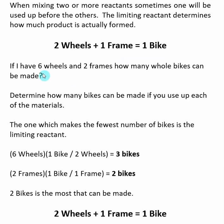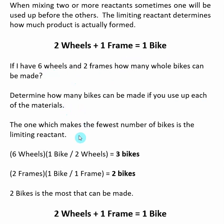In this question, I have six wheels and two frames, and I want to know which of these two reactants is my limiting reactant and how many bikes I can make. The first thing we do is determine how many bikes can be made if we used up each of the individual reactants separately — two separate calculations. Then we compare which reactant makes the fewest number of bikes, and that one is the limiting reactant.